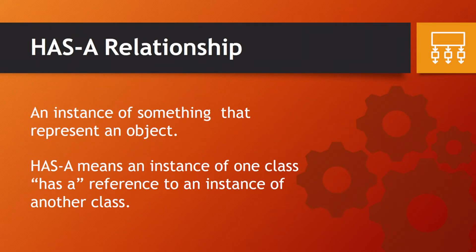So let us now proceed to the HAS-A relationship. HAS-A is an instance of something that represents an object. HAS-A means an instance of one class has a reference to an instance of another class - it has a reference to another class.